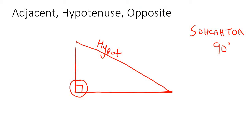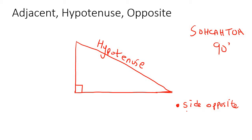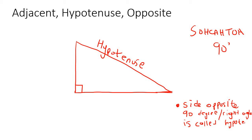The side that is opposite the right angle is called the hypotenuse. So that's the first little thing I would want you to remember — the side opposite the 90-degree angle, or the right angle, is called the hypotenuse. That's important. Now let's give some letters here. For example, A, B, and C. Let's say we're looking at angle A.